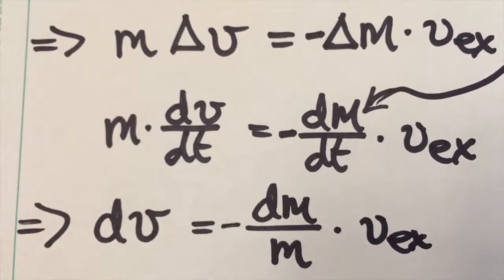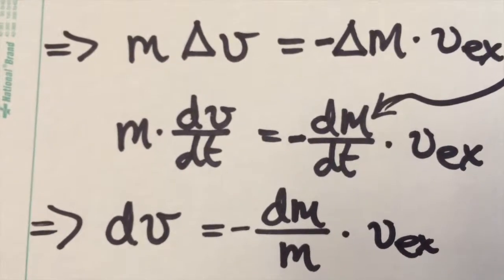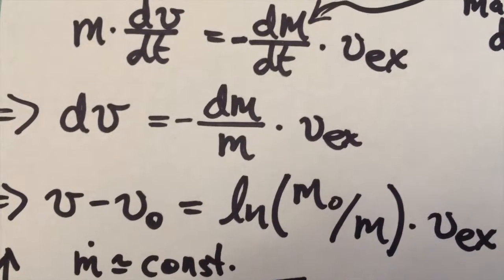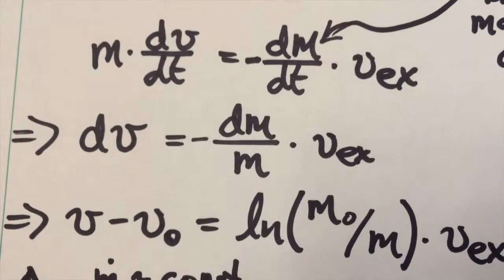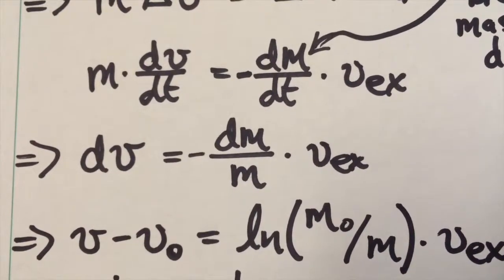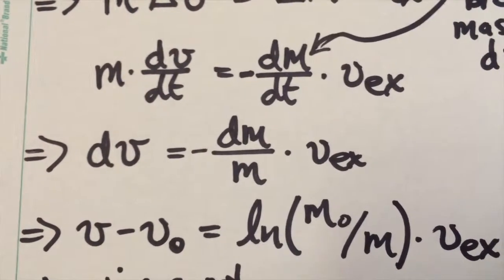This is a differential equation we can then integrate to solve for the velocity as a function of the mass, and we get an equation that looks like this. So v minus the initial velocity is equal to the natural log of the initial mass of the rocket, divided by its final mass at any instant, all times the exhaust velocity.